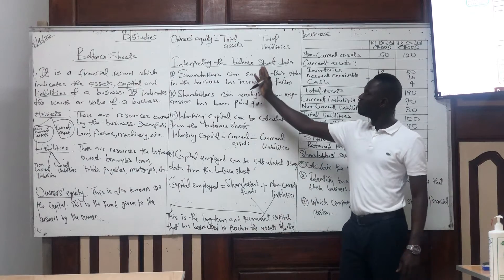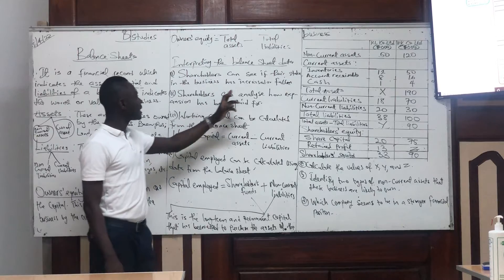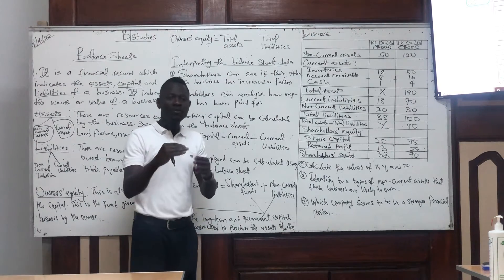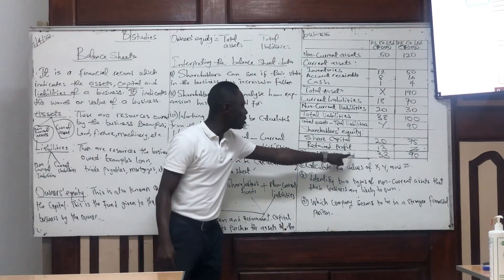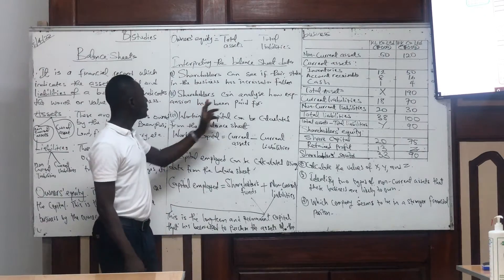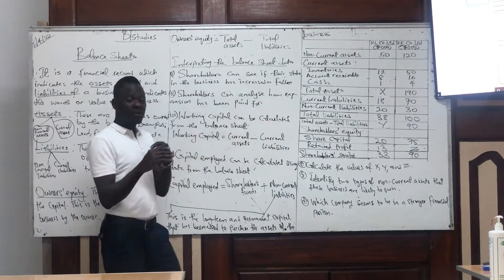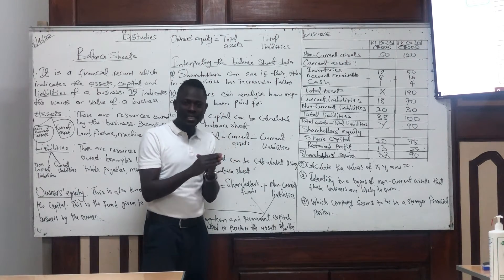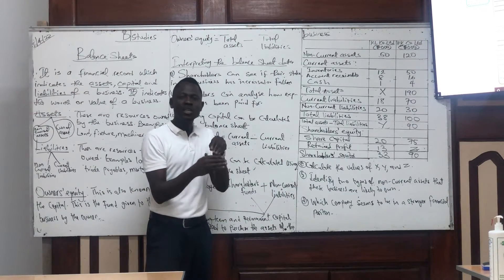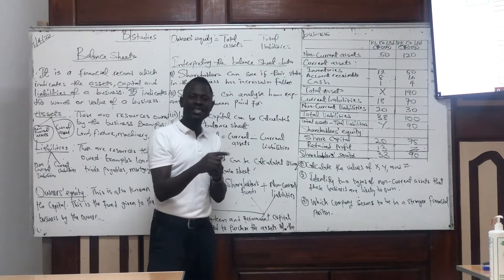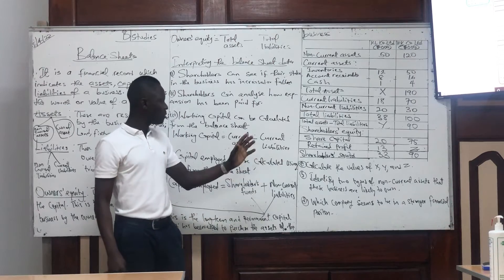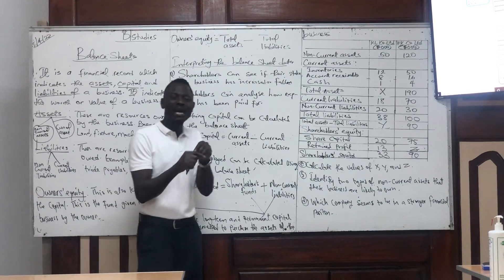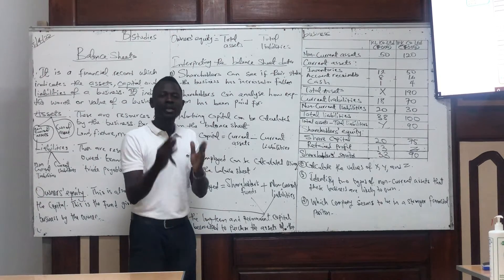The uses of the balance sheet: Number one, shareholders can see if they have a stake in the business — with the balance sheet, you can know as a shareholder whether your share has increased, as it will be shown in your shareholder's equity. Number two, shareholders can analyze how expansion has been paid for — for example, whether the business expanded through retained profit or through a long-term liability like a loan.